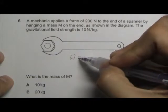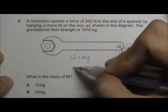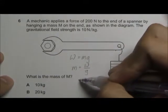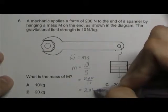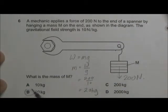We use the formula W equals Mg, so M equals W over G. That will be 200 divided by 10, which is 20 kg. Answer B.